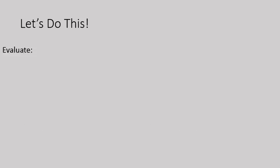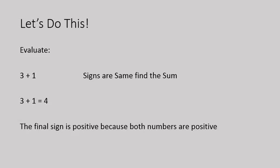It's very similar to when you have two positive numbers. 3 plus 1, for example. The signs are the same, so I'm going to find the sum. 3 plus 1 is 4. And the final sign is positive because both numbers are positive. See how that works? When the signs are the same, you follow the same steps. I realize this is a nice easy question. It's helpful when we finish off with a nice easy question. The solution is positive 4.